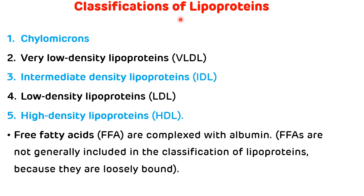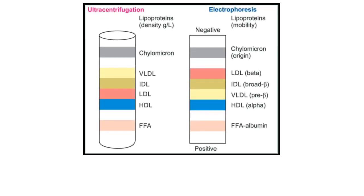This is the classification of lipoproteins based on their separation in ultracentrifugation. This picture shows the separation of lipoproteins in ultracentrifugation as well as in electrophoresis. In ascending order of density: chylomicron has the least density, then very low density lipoprotein, then intermediate density lipoprotein, then low density lipoprotein, and then high density lipoprotein which has the highest density.